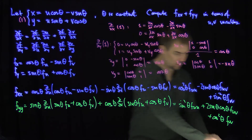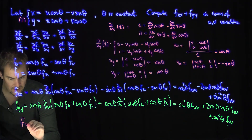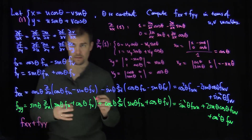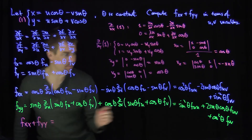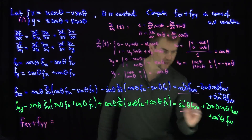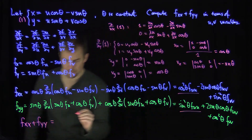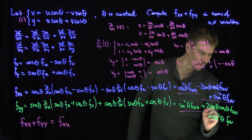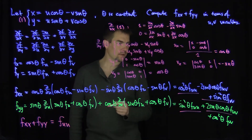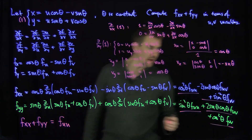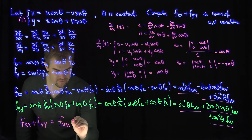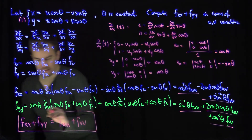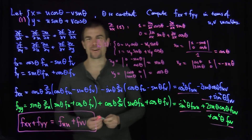Adding the two expressions, fxx + fyy equals (cos²θ + sin²θ)fuu plus the cross terms, which cancel out entirely since they are equal and opposite, plus (sin²θ + cos²θ)fvv. Each Pythagorean pair equals 1, so fxx + fyy = fuu + fvv. This shows that the Laplacian is invariant under coordinate rotation. Thank you very much.